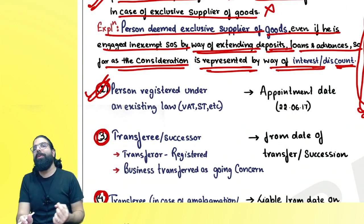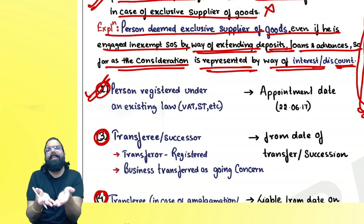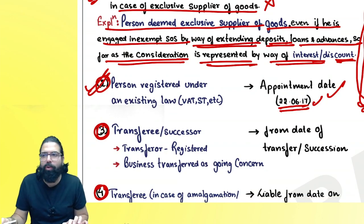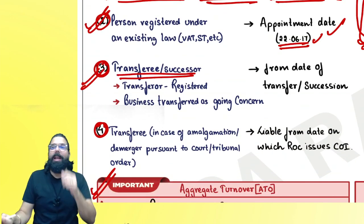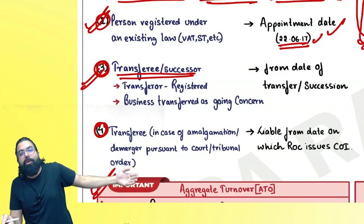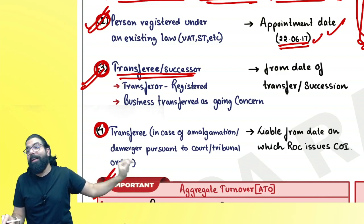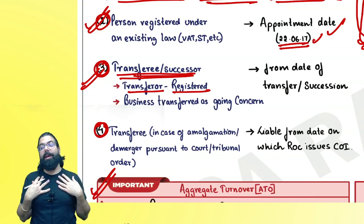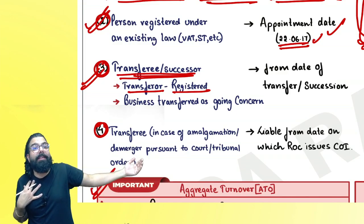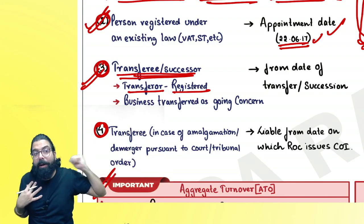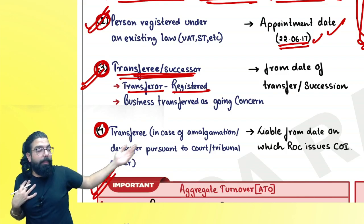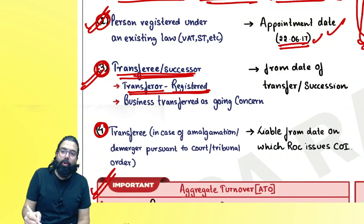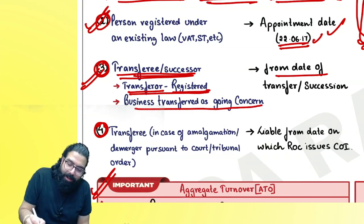Under section 22, persons registered under earlier law (e.g., service tax) are required to take GST registration from the appointment date of 22nd June 2017. Under section 22(3), a transferee — when a registered business is transferred — must take compulsory registration from the date of transfer or succession. The transferee receives all assets and liabilities and must collect and pay GST to the government.